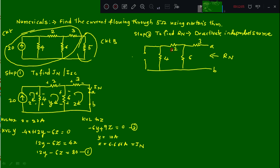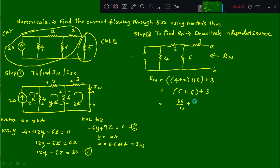The 6 ohm is in parallel with (4+2) = 6 ohm, giving 6 parallel 6 = 3 ohm. This combination is in series with the 3 ohm resistor. So Rn = 3 + 3 = 6 ohm. Therefore Norton's equivalent resistance Rn = 6 ohm.